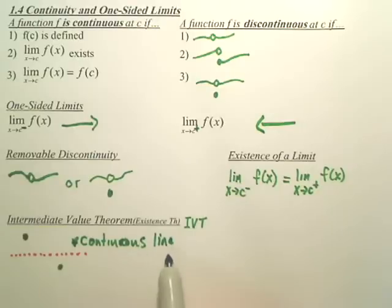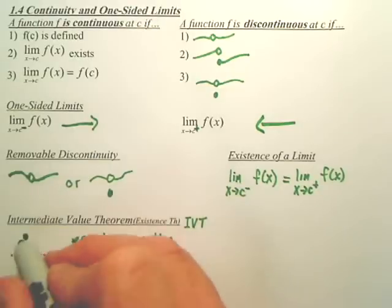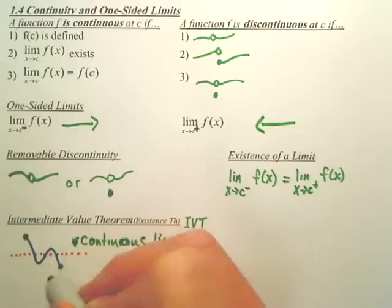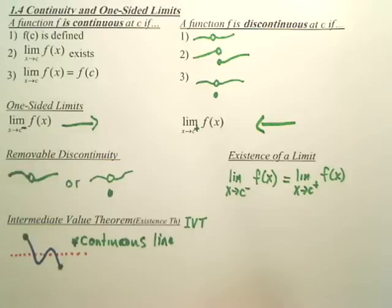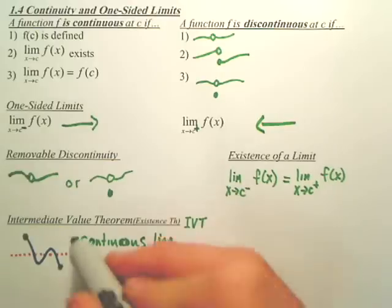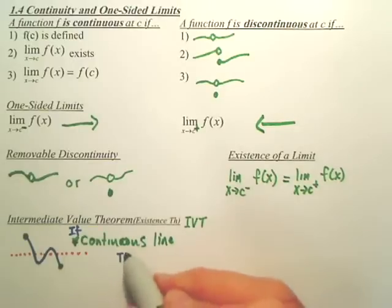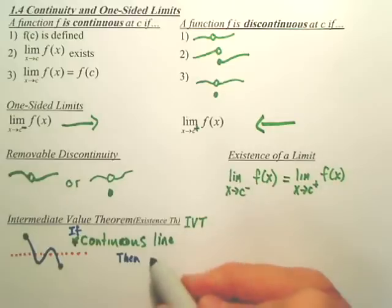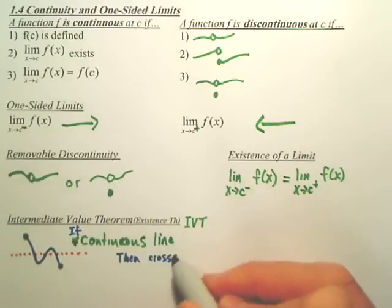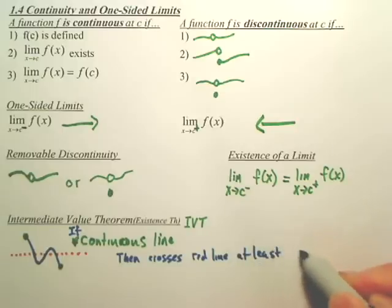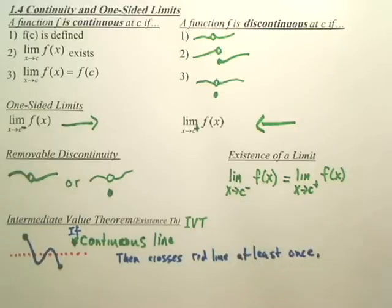If the line is continuous, it has to cross at least once, possibly twice. So, if continuous line then crosses red line at least once.